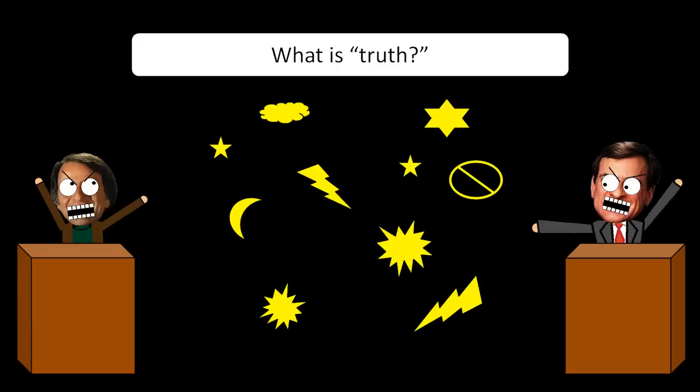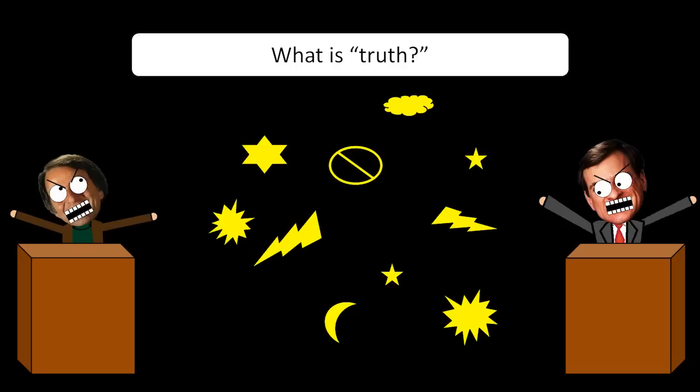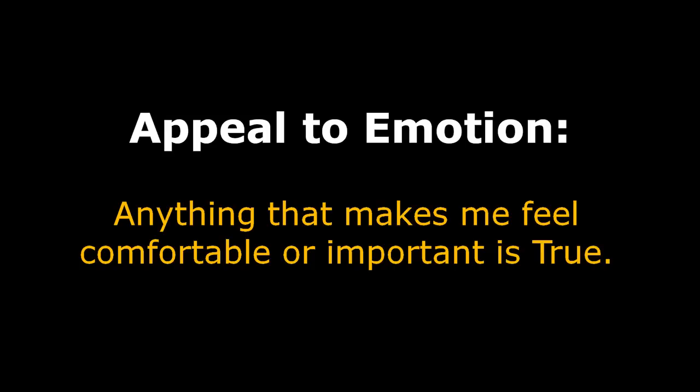This is the point where philosophers really start to butt heads with each other, but a key idea often gets overlooked in the process. Specifically, truth is just a word and can therefore be defined by whatever arbitrary metric we want. For example, maybe I want to measure propositions by their power to make me feel comfortable and important.